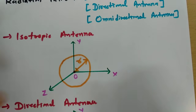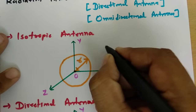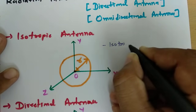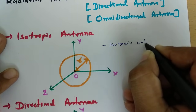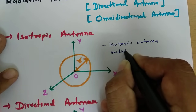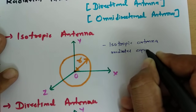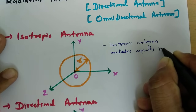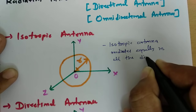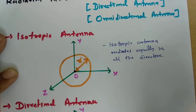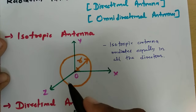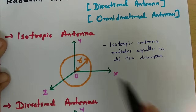So, isotropic antenna radiates equally in all directions and its radiation pattern will be a sphere.